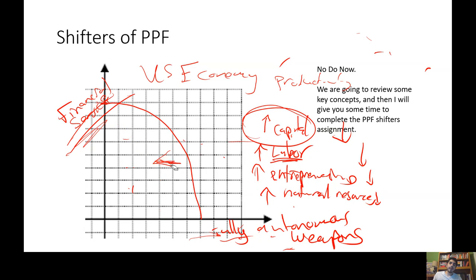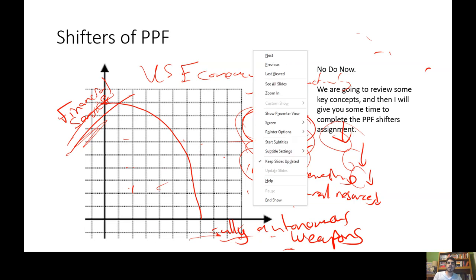When thinking about shifters of the PPF, think in terms of enhancing or decreasing the productivity of one of the factors of production — that should have an impact on the frontier.